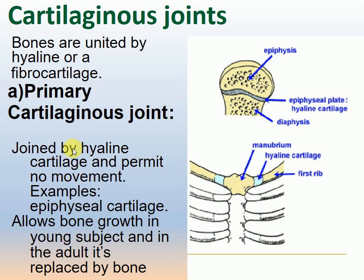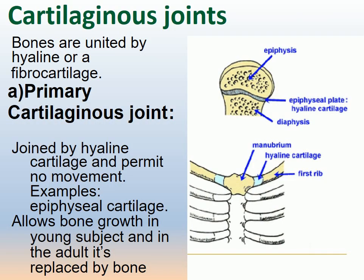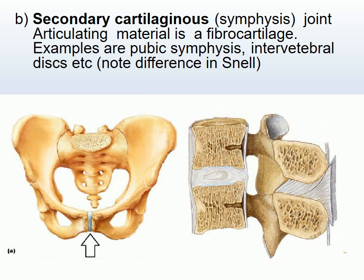Secondary cartilaginous joints are sometimes called symphyses. The articulating material is fibrocartilage. Examples include the pubic symphysis and intervertebral disc. The key difference: primary cartilaginous joints are made of hyaline cartilage and permit no movement; secondary cartilaginous joints are made of fibrocartilage and permit some degree of movement. The pubic symphysis joins the two pubic bones, and the intervertebral disc is found in the vertebral column.